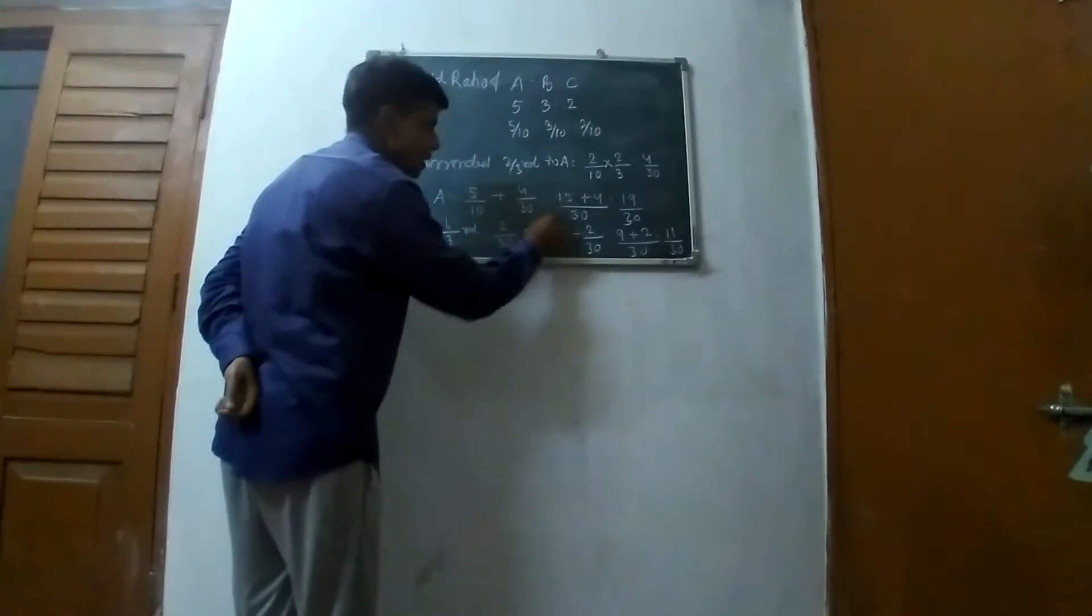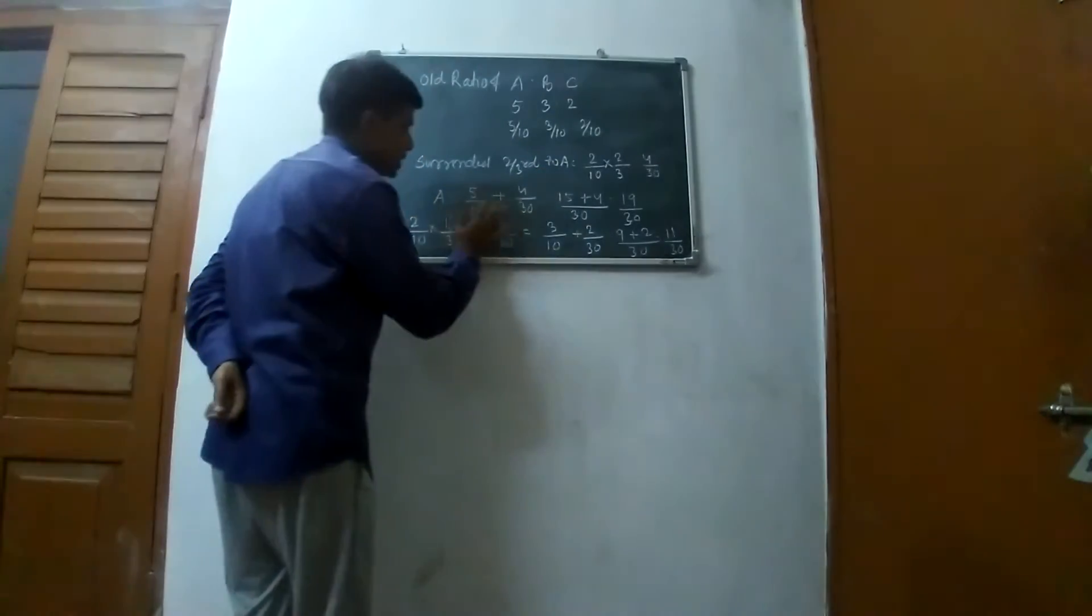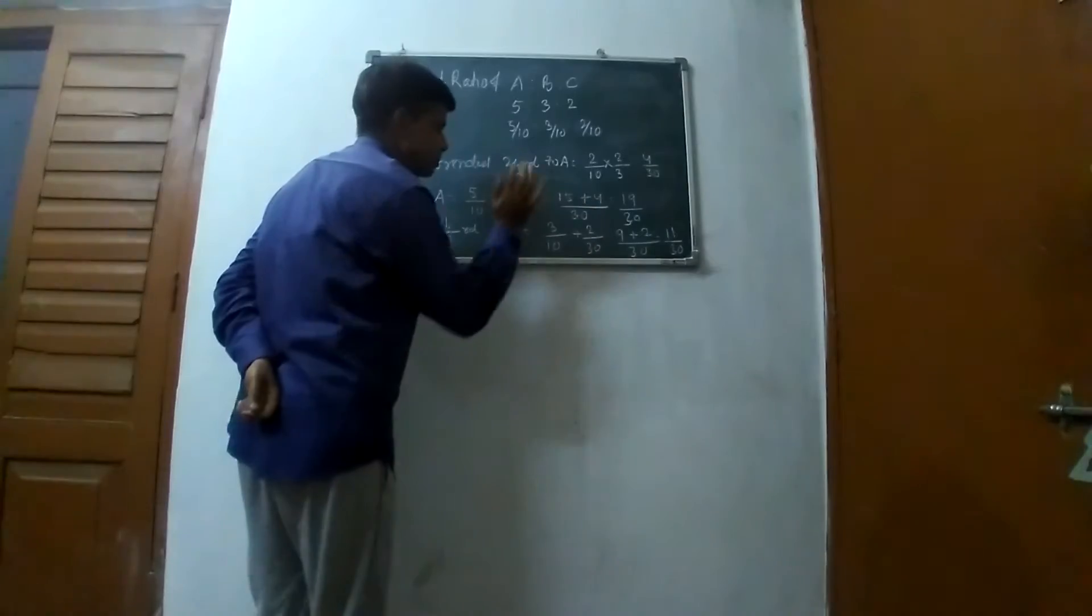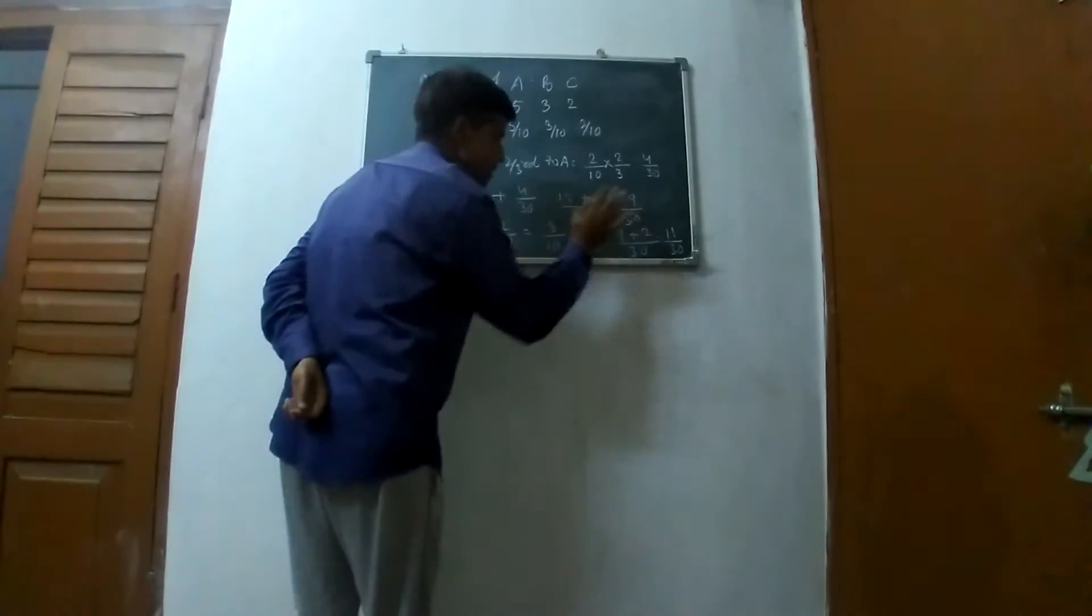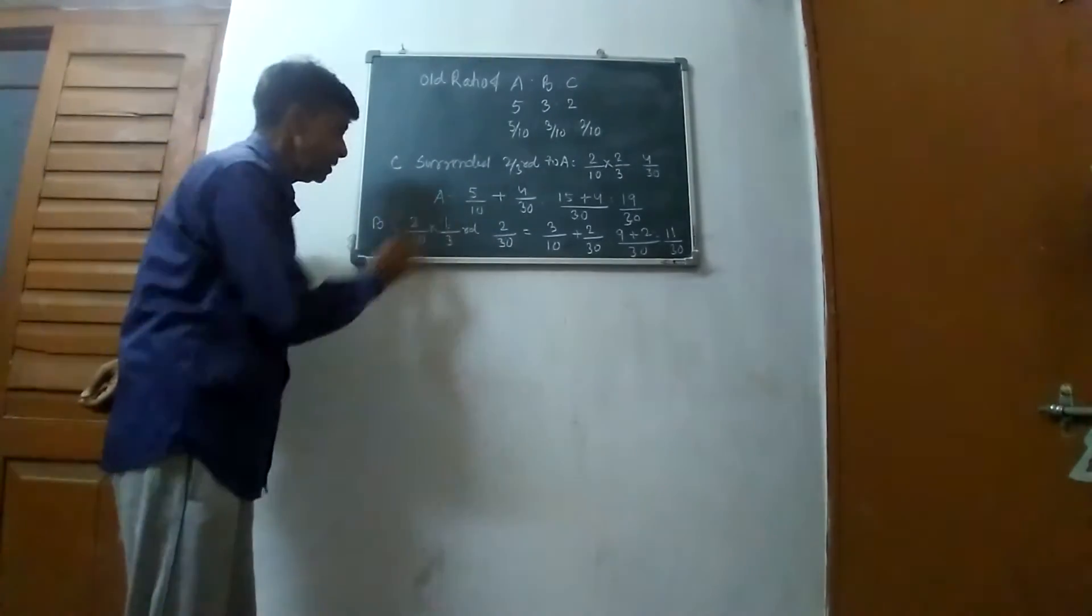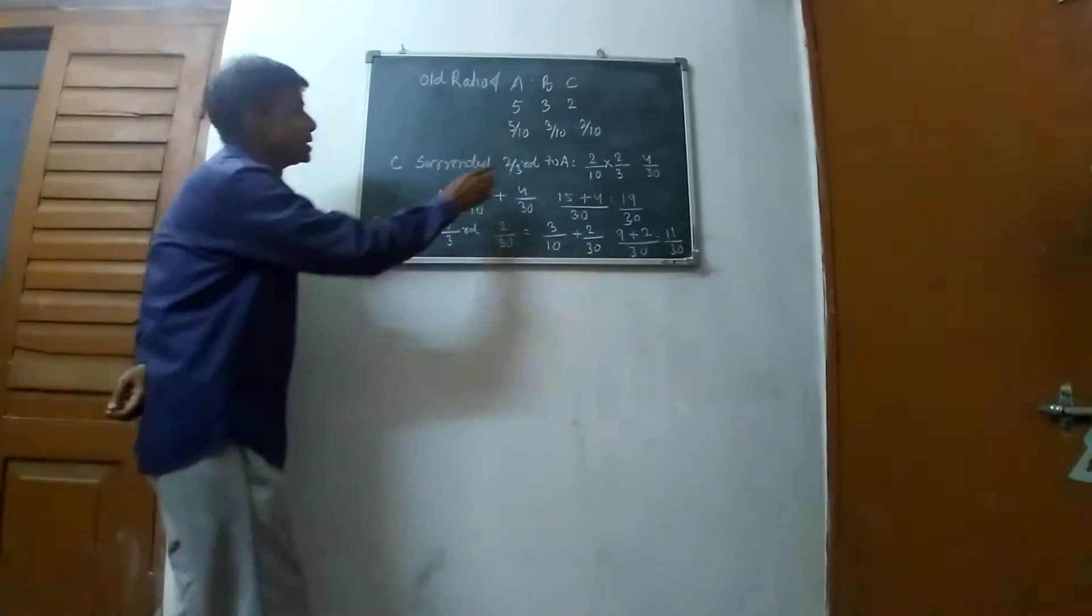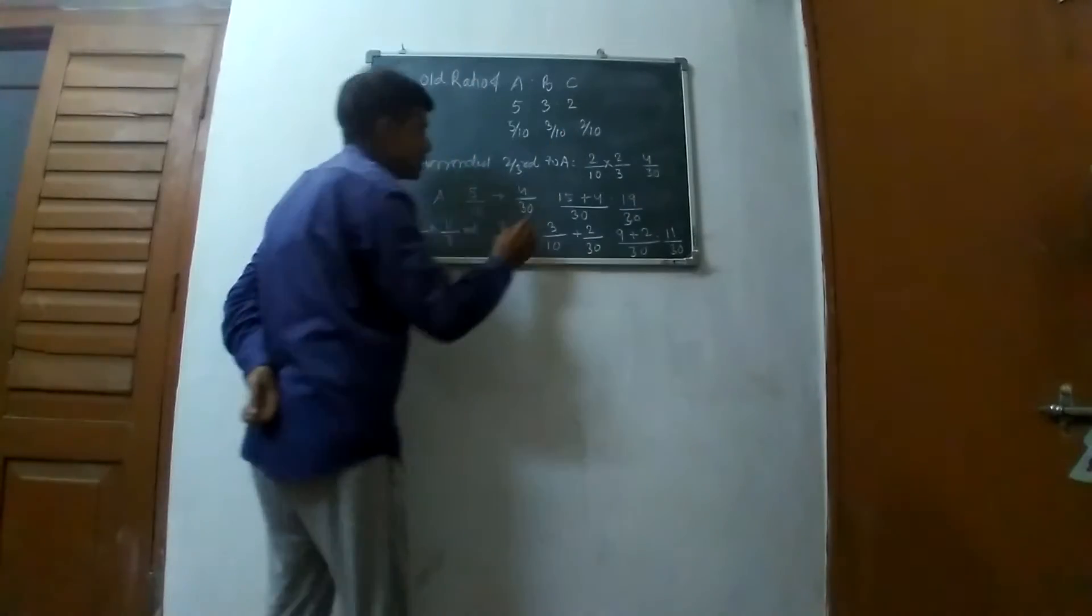For A's calculation: A gets 19/30. This is A's new share. And for B: B had 3/10, and C gave 2/30 to B.